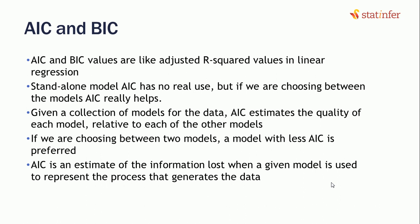We can go with AIC and BIC values. AIC is Akaike Information Criteria and BIC is Bayesian Information Criteria. These values are like adjusted R-square values in linear regression models. Just like adjusted R-square, standalone model AIC has no real use, but if we are choosing from three different models, then the AIC value might help. We will check the AIC value of each of those models, and whichever is giving us the lowest AIC value, we will go with that particular model.